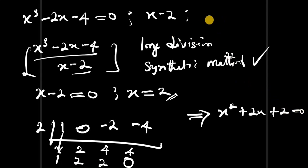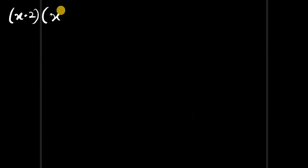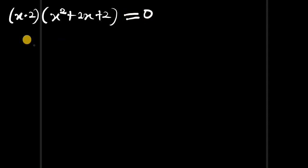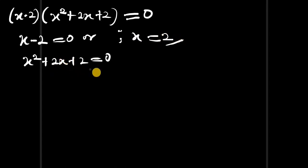The result of the synthetic division is x squared plus 2x plus 2, equal to 0. So the full factored form is x minus 2 times x squared plus 2x plus 2 equals 0. Setting each factor to zero: x minus 2 equals 0 gives x equals 2. Now we solve the quadratic x squared plus 2x plus 2 equals 0 using the quadratic formula.